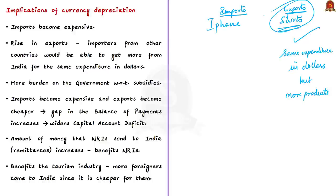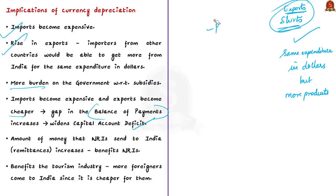On the other hand, Indian importers are adversely affected. A large proportion of India's imports are oil and gold — as much as 35% of India's import bill is owed to oil from the Middle East. When the value of rupee falls, the import cost of oil goes up for the general public. Other negative impacts include more burden on the government with respect to subsidies, and when imports become expensive while exports become cheaper, the gap in the balance of payments widens, increasing the current account deficit.